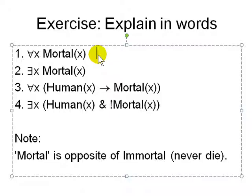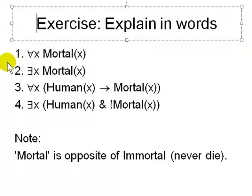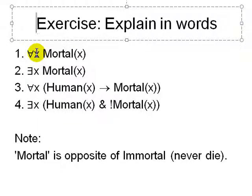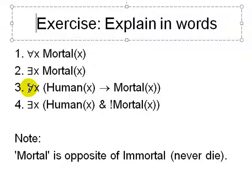Typical examples in logic books: For all X, Mortal(X) — every person in your object set will eventually die. There exists X means there is a person who is mortal. More completely: For all X, if X is human then X is mortal. And there exists an X such that X is human and X is not mortal — 'not mortal' is the same as 'never dies.'